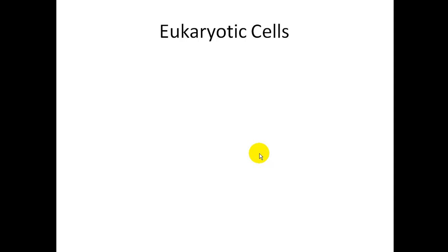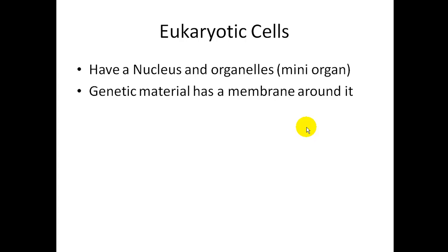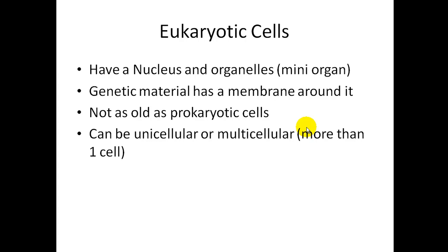The other type of cell are eukaryotic cells. Eukaryotic cells are the cells that you've heard of before, have seen the structures of before. These cells have a nucleus and organelles. An organelle is basically a mini organ that all work together for the cell. Our genetic material, because I'm saying 'our' because we are made of eukaryotic cells, our genetic material, meaning our DNA, has a membrane around it. It's called the nuclear membrane. It's not just floating around in the cytoplasm. Eukaryotic cells are not as old as prokaryotic cells. Eukaryotic cells can be unicellular or multicellular, which means they can be more than one cell and compose of tissues in higher animals.